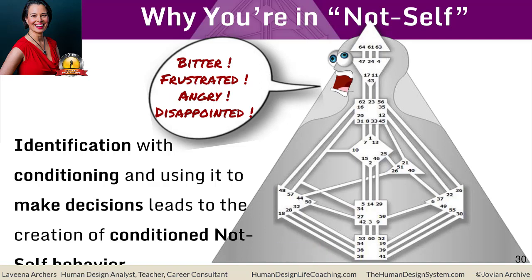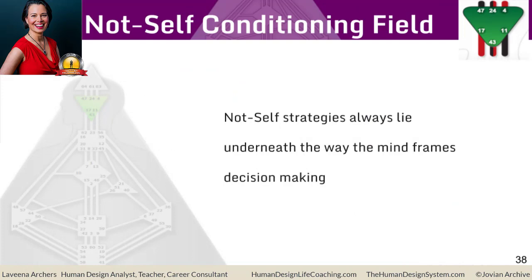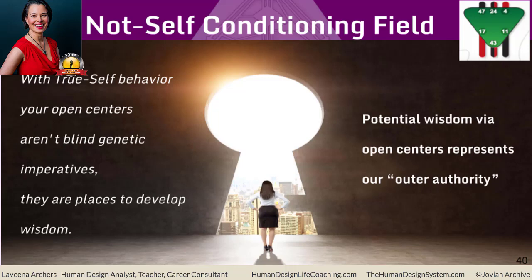In the body graph, if you've got a totally open chart — meaning you're a reflector chart with no colored-in centers — the disappointment is coming from the open channels. Underneath the way the mind frames decision-making is your not-self strategy: the not-self strategies of the open center and more, as far as the way your mind frames how you take in life. In the not-self conditioning field, there is a potential for wisdom. Your wisdom potential comes from open centers, open channels, and open gates. That represents your outer authority — how you can take in, measure, and compare what you're seeing in the outside world, and align to sharing your differentiated, unique perspective.